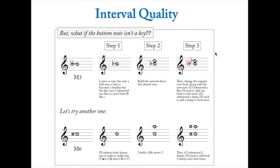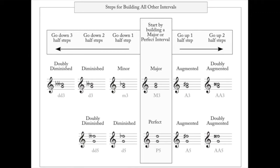Since the original note was B double flat, I subtracted one flat to simplify. Now I add one flat back to each note. So D becomes D flat, and I have a major third above B double flat. Try another: C double sharp - build a major sixth above C instead. In C major, counting up six gives A, and C major has no sharps or flats, so A is a major sixth above C. I subtracted two sharps, so I add two sharps back: C double sharp to A double sharp.